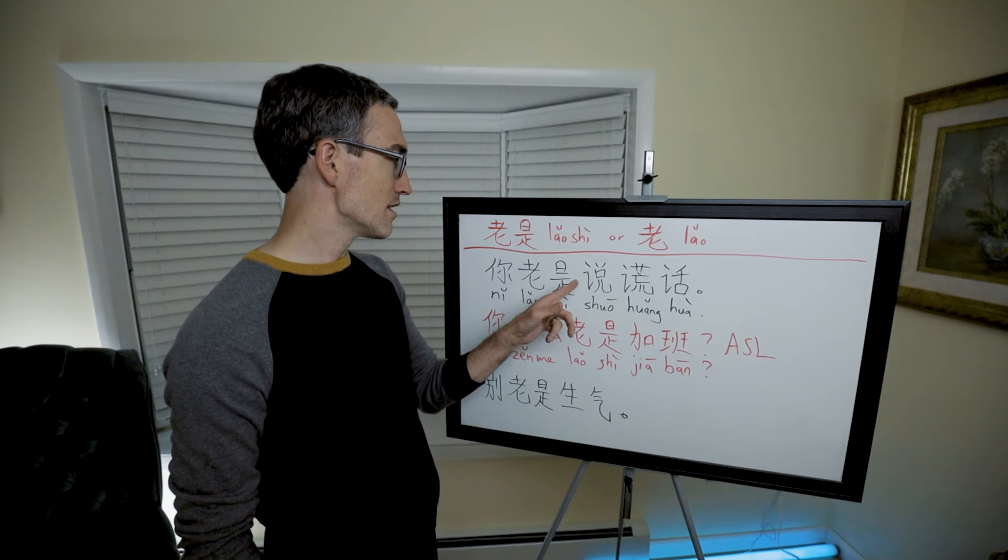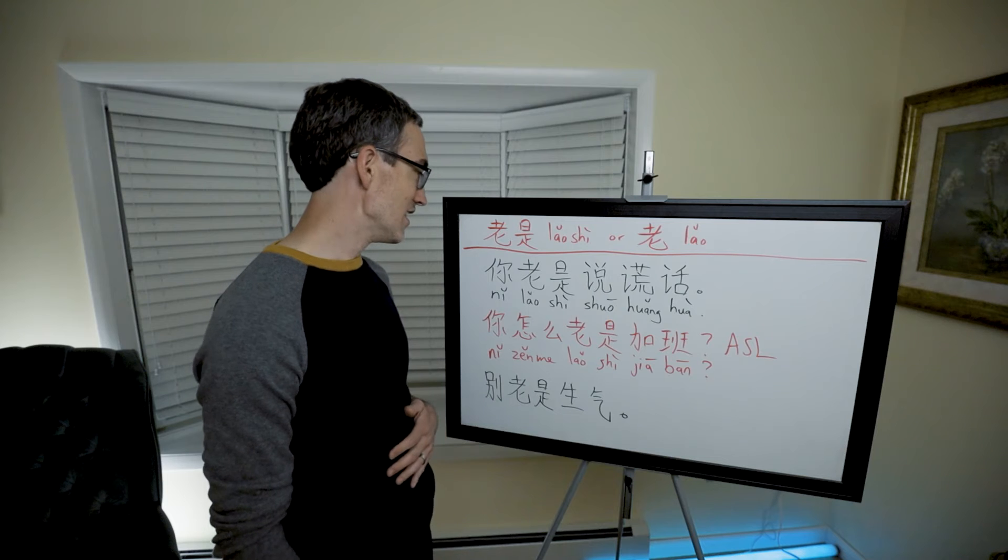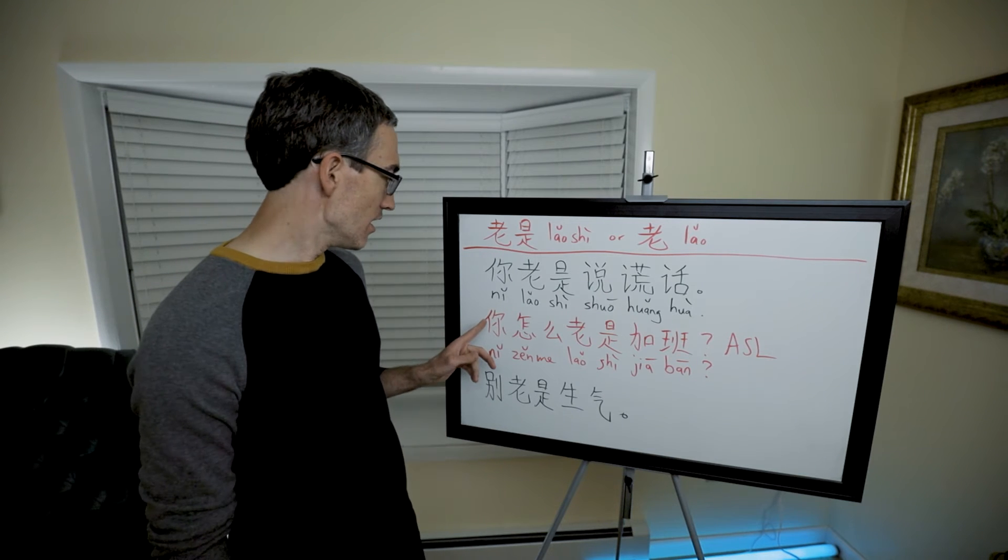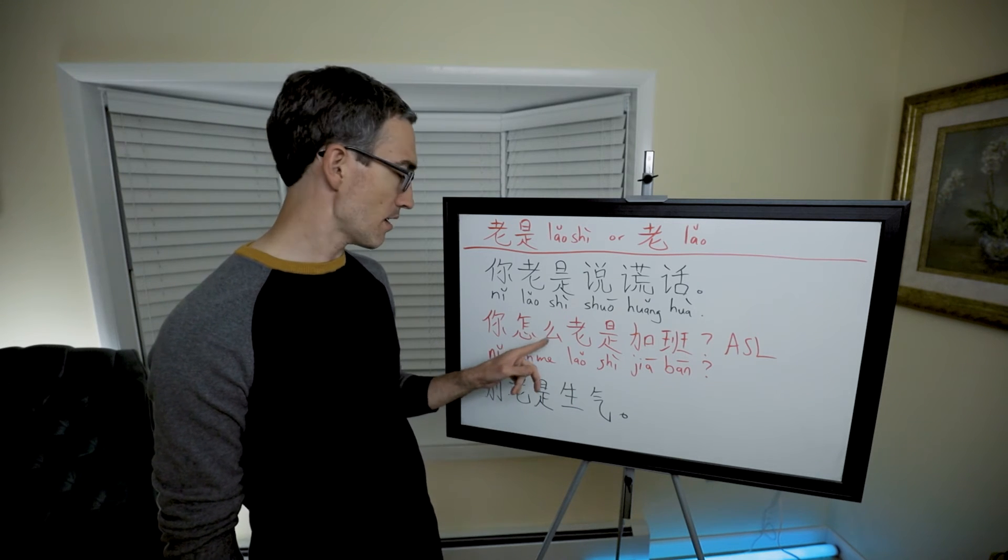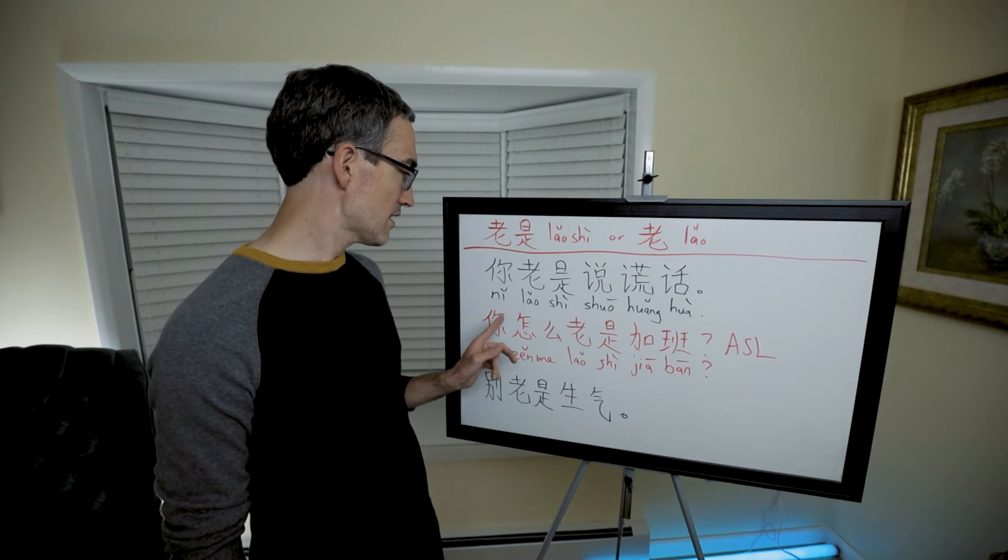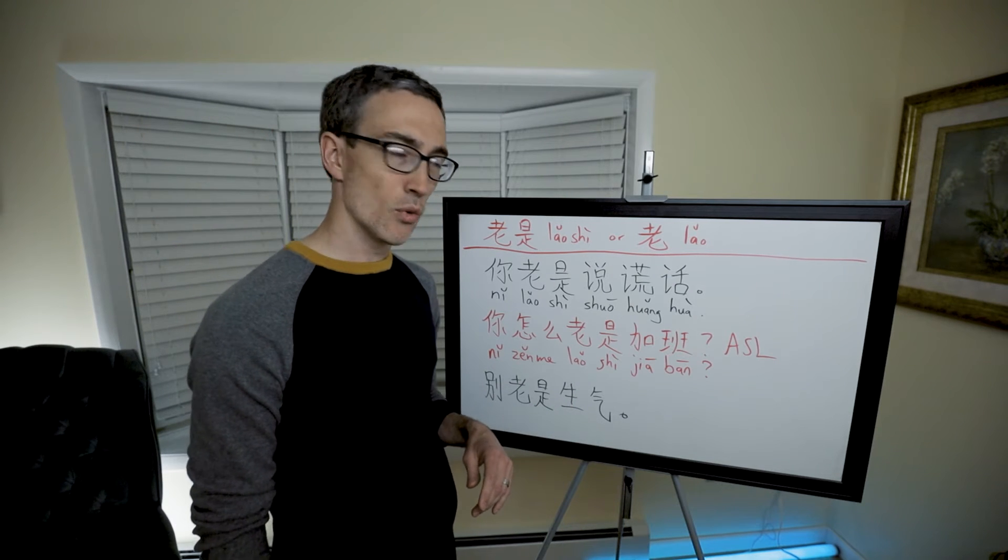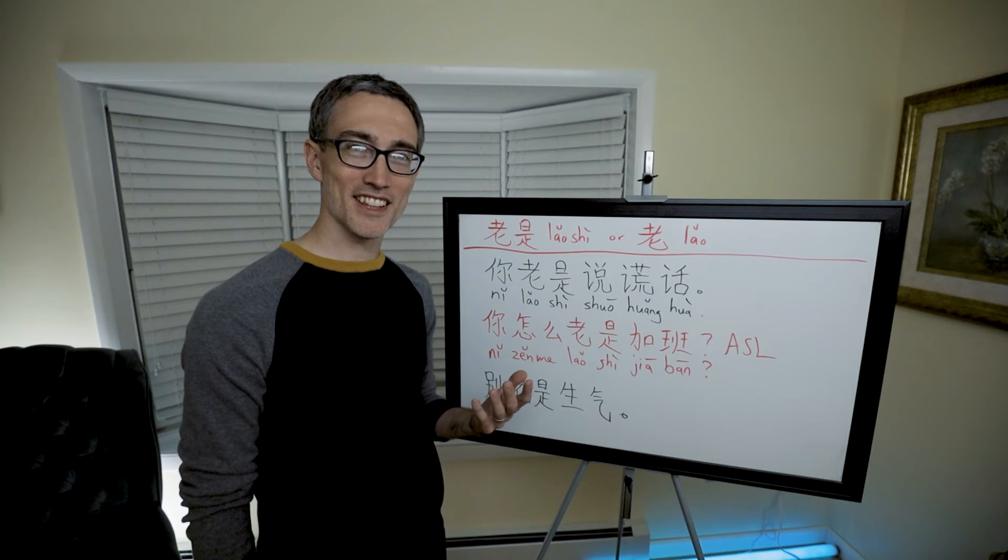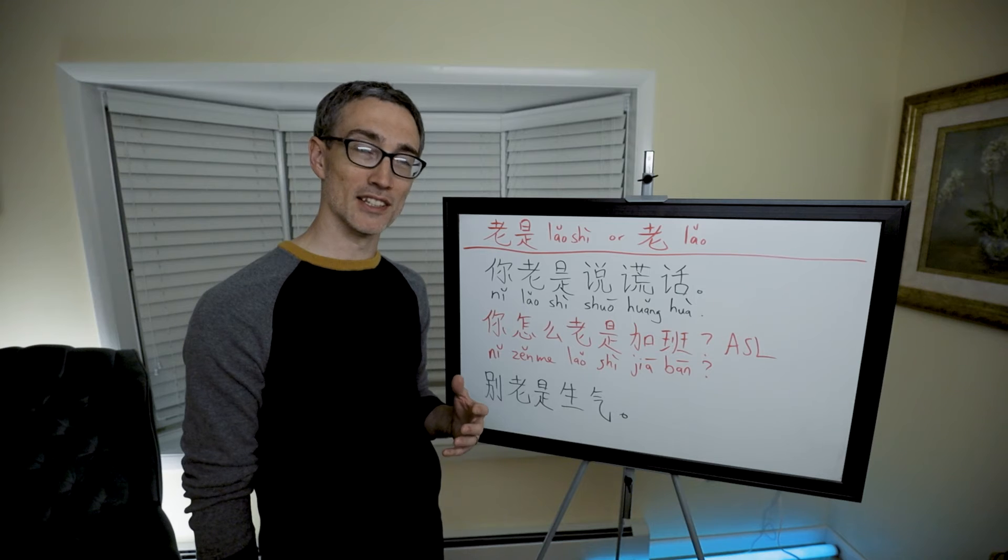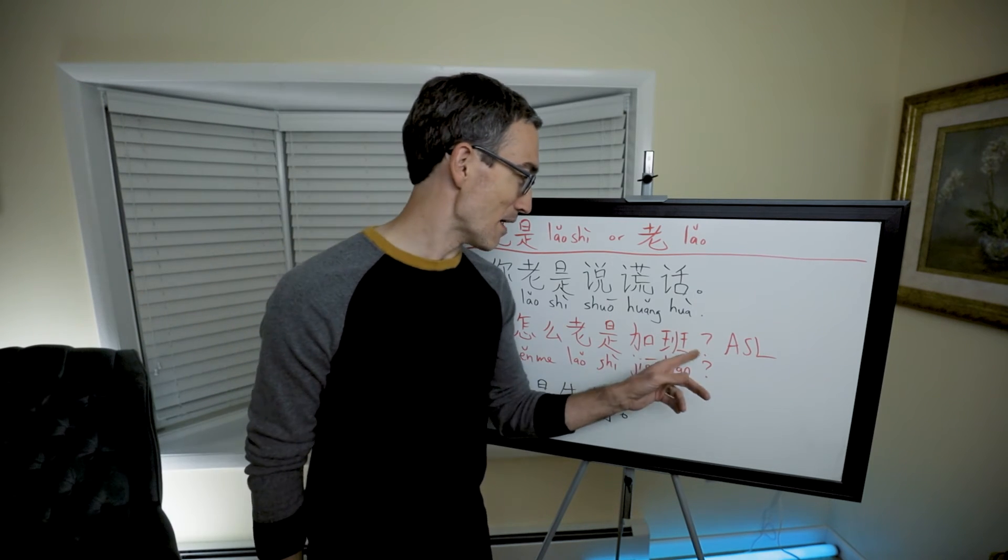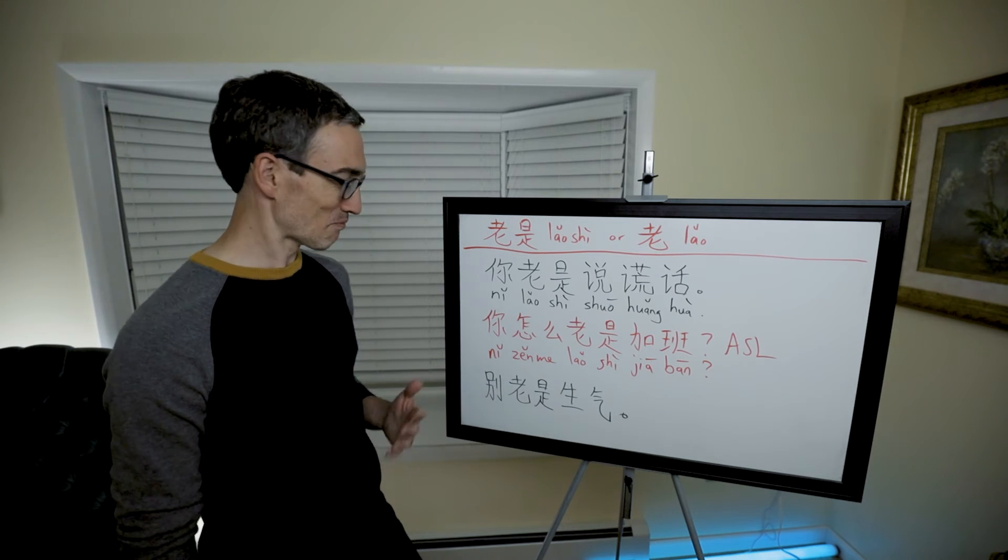你老是说谎话. You 老是 always tell or speak 谎话, lies. 你老是说谎话. 你怎么老是加班. You, how come, 怎么? 你怎么老是 always 加班, doing overtime. Why are you always doing overtime? I feel like it's evening time right now, and I feel like my brain is a little fried, and I can't tell if I'm speaking English or Qinglish sometimes.